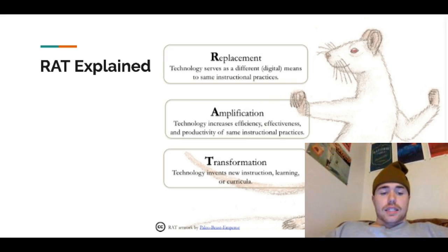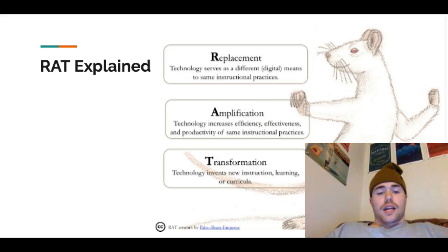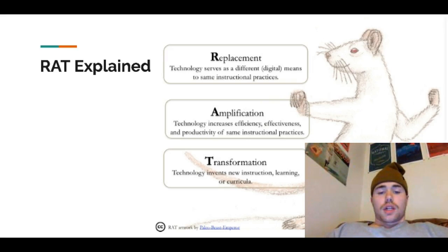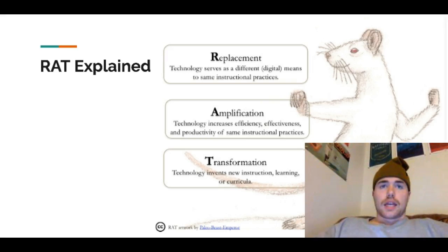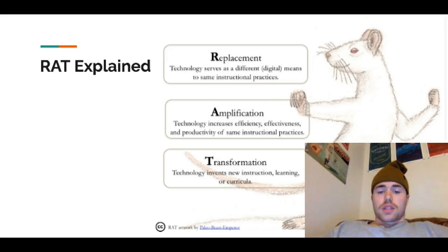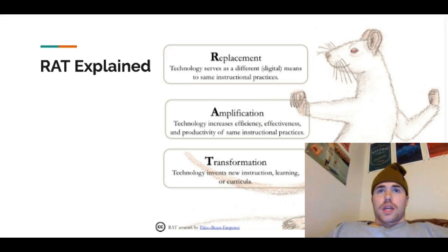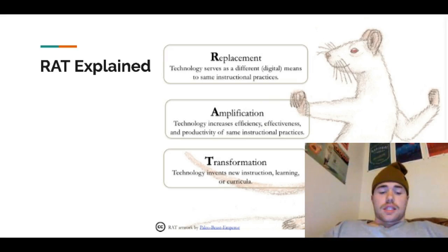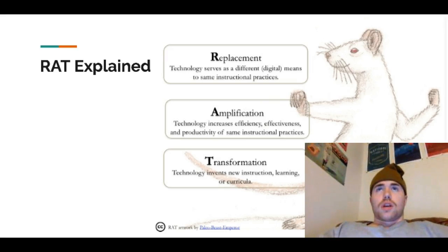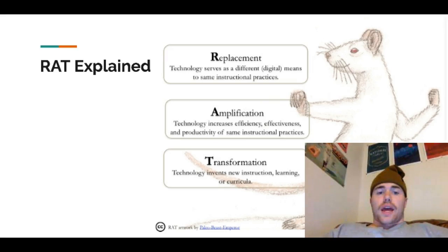And lastly, the T in RAT stands for transformation, and they define it as the technology inventing new instruction, learning, or curricula. That basically means that the technology you're implementing in the classroom is bringing in brand new information to the kids — it's something that you couldn't have done without it.